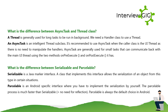What is the difference between Serializable and Parcelable? Serializable is a Java marker interface; a class that implements it allows the serialization of an object in certain situations. Parcelable is an Android-specific interface where you implement the serialization yourself. The Parcelable process is much faster than Serializable as it requires no reflection. Parcelable is always the default choice in Android.